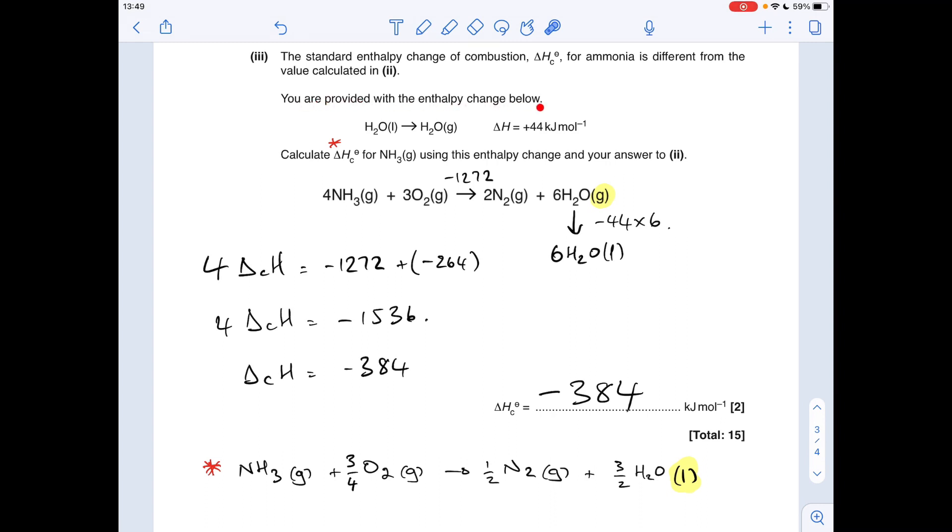We're given some extra information. To go from liquid H2O to gaseous H2O, the enthalpy change is plus 44 kilojoules per mole. We've got to calculate the standard enthalpy change of combustion of ammonia using the enthalpy change previously calculated and this new information.